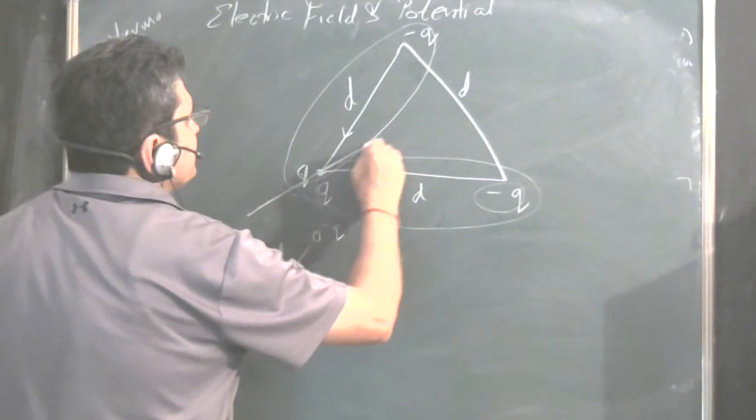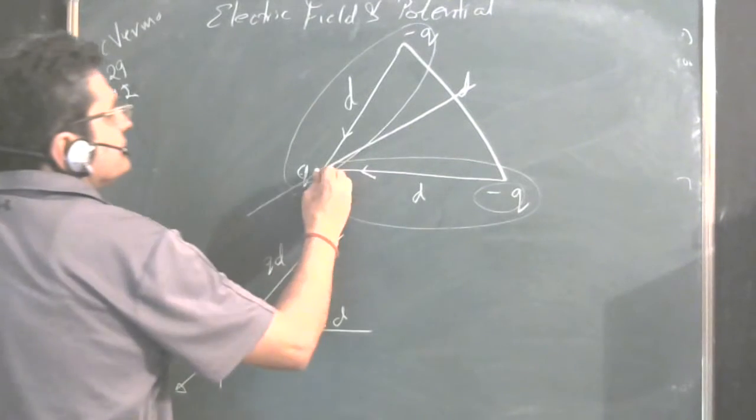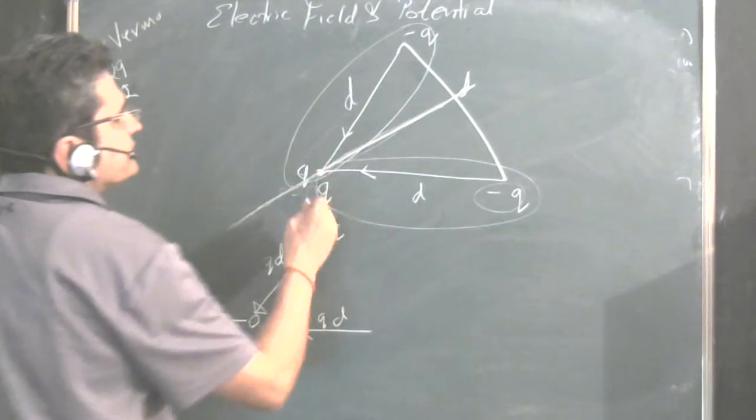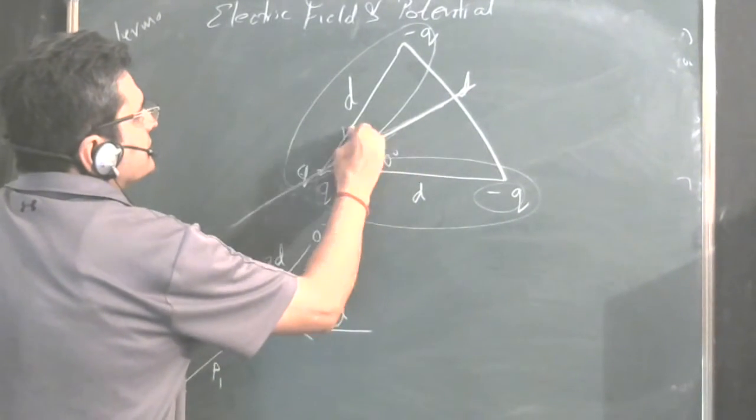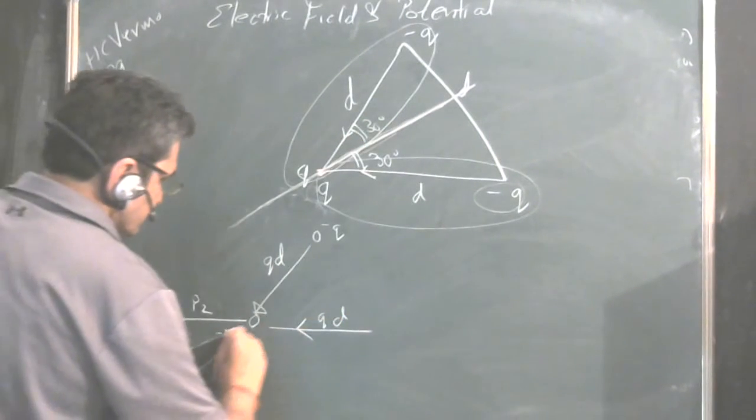So by symmetry and these are equal in magnitude, so you can straightaway take their projection along the bisector of this triangle. So this will be 30 degrees, this will be 30 degrees, that is here you can show it. This is 30, this is 30.